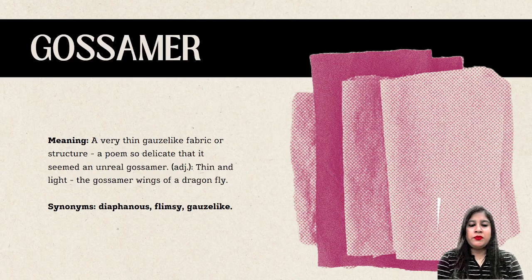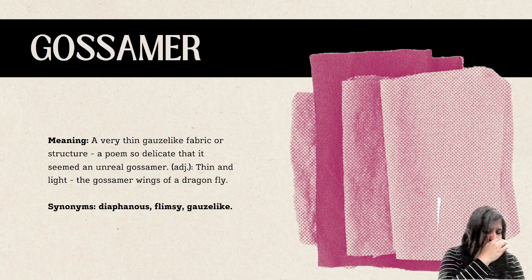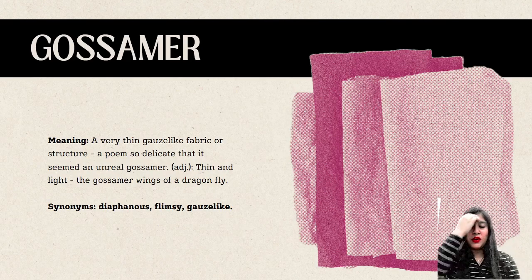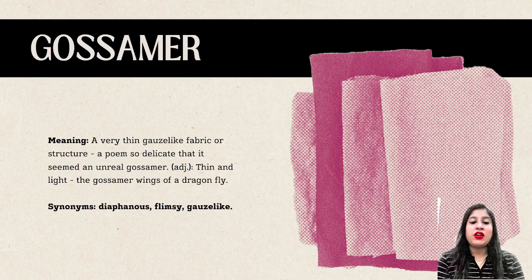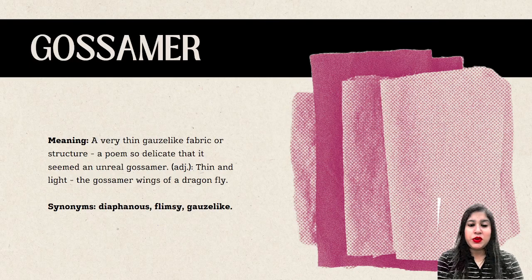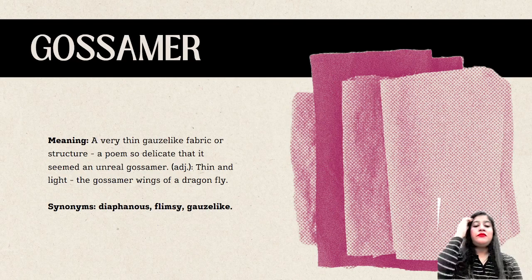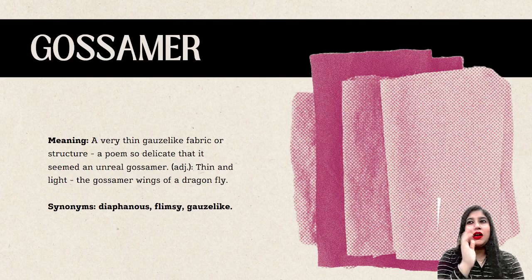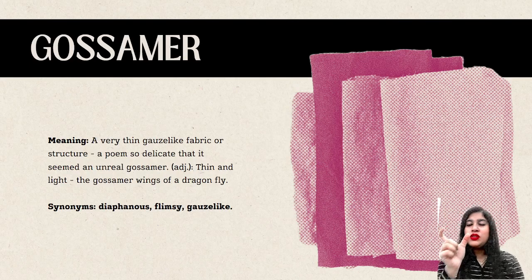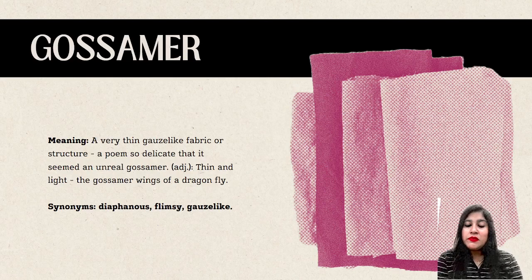Gossamer means a very thin gauze-like fabric or structure. Example: 'A poem so delicate that it seemed an unreal gossamer.' Also used as: 'The gossamer wings of a dragonfly' — that mesh-like, net-like structure of dragonfly wings. Synonyms would be diaphanous, flimsy, and gauze-like.